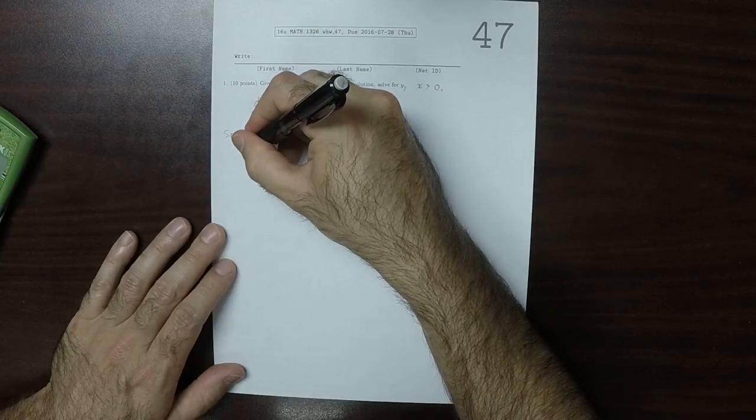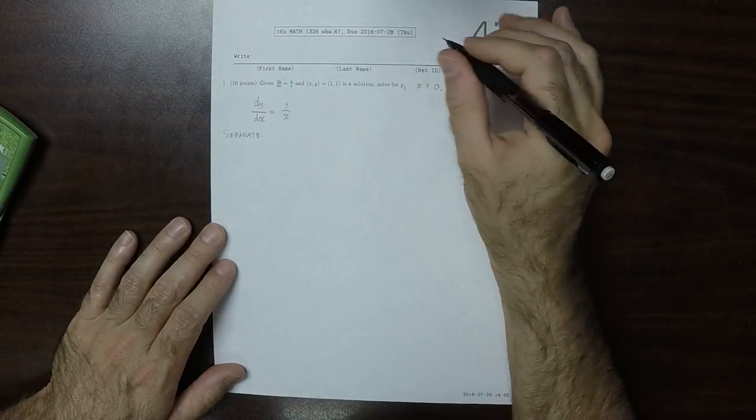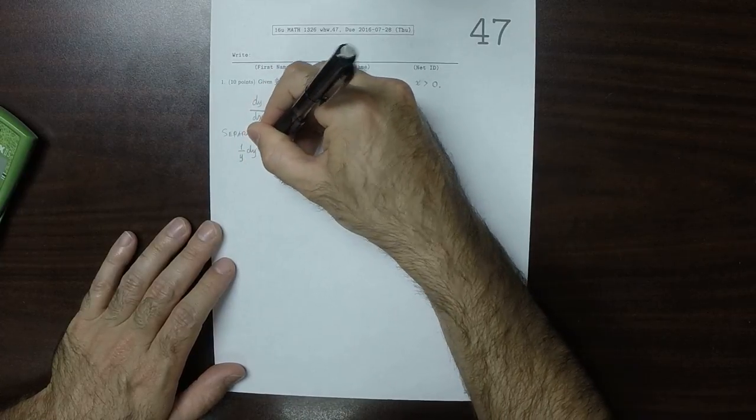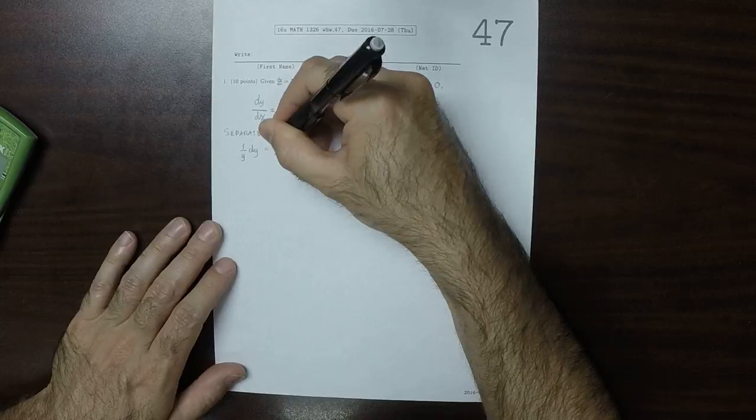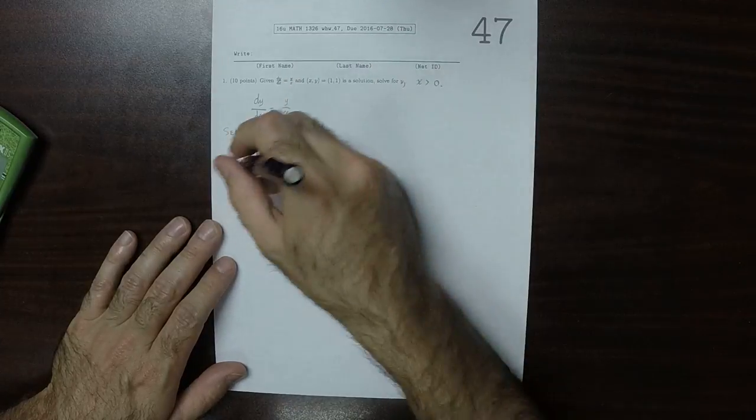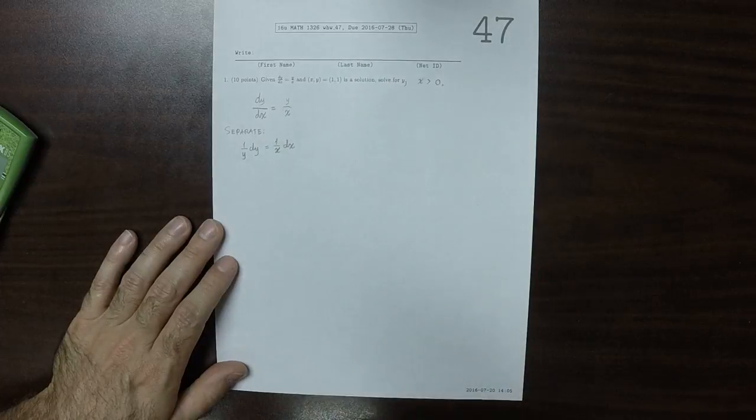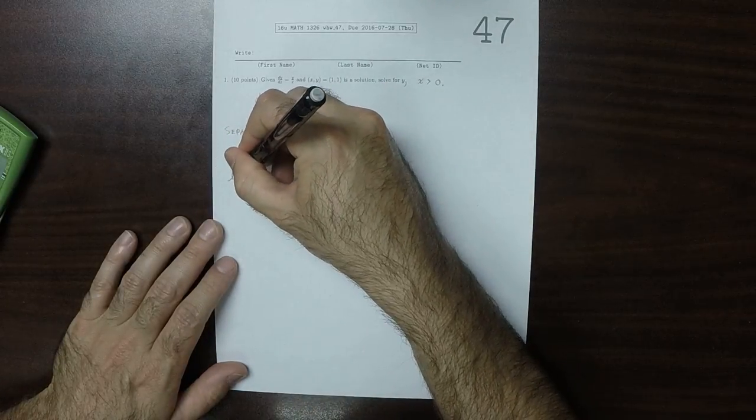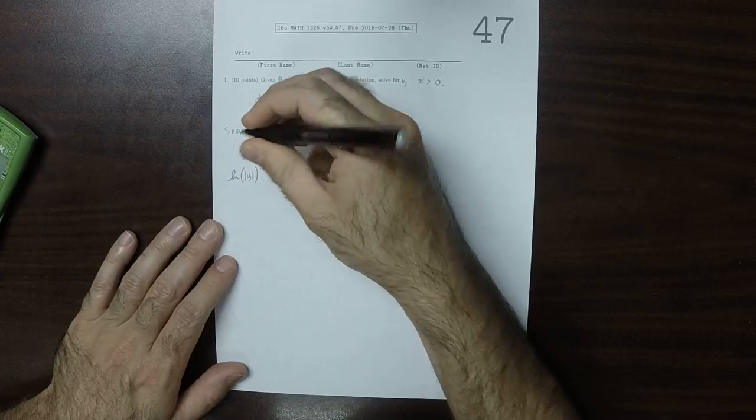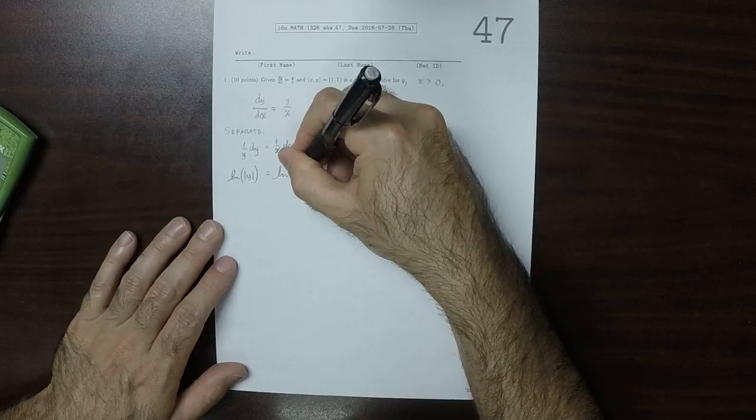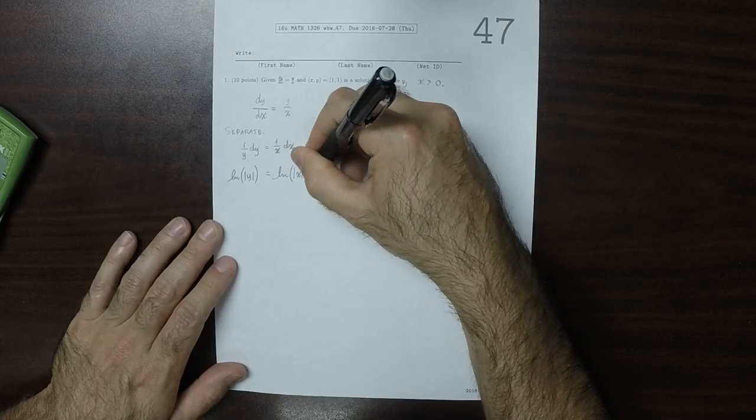So that would be 1 over y dy is 1 over x dx. If you anti-differentiate both sides, then you get log of absolute value of y is log of absolute value of x plus a constant.